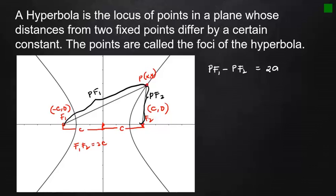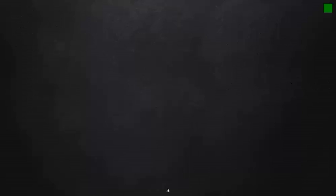Let's identify the coordinates of these important points. The coordinates of P are (x, y), the coordinates of F₁ are (−c, 0), and the coordinates of F₂ are (c, 0). Let's now derive the equation of a hyperbola.